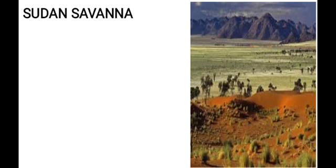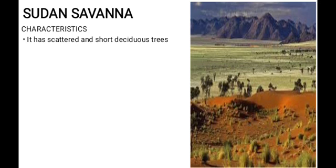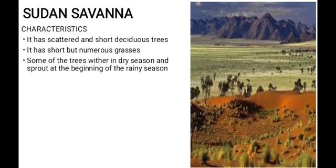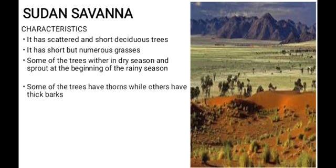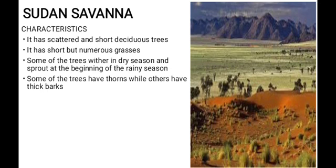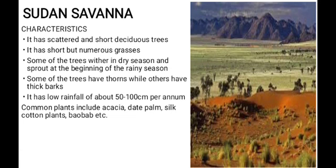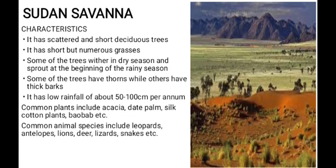Moving north after the Guinea savannah, we find the Sudan savannah. It has scattered and short deciduous trees, and short but numerous grasses. Some trees wither in the dry season and sprout at the beginning of the rainy season. Some trees have thorns while others have thick barks. Rainfall is low, about 50 to 100 centimeters per annum. Common plants include acacia, baobab, and date-type plants. Animals found here include leopards, antelopes, lions, deer, lizards, and snakes.